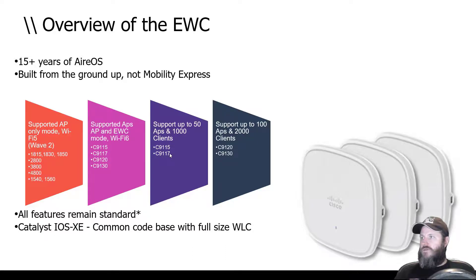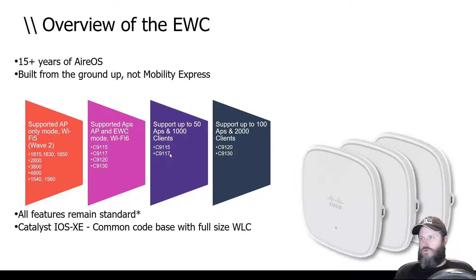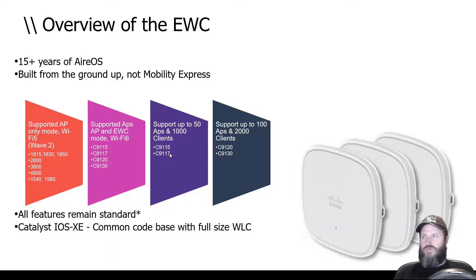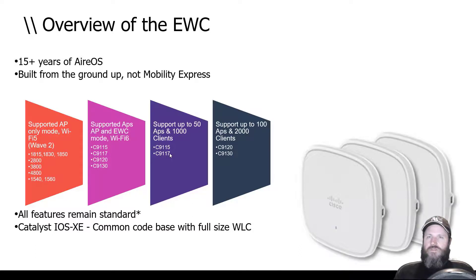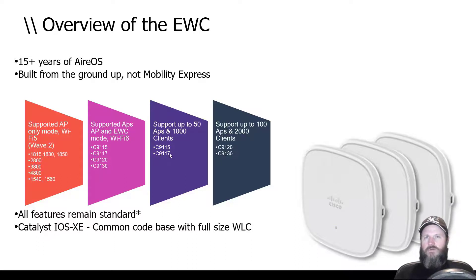The features remain standard — with an asterisk. From the real 9800s to the embedded wireless controller version, it's pretty much the same Catalyst IOS XE common code. However, there are differences: you're missing the Wave 1 APs, the EWC runs in FlexConnect-only mode, and there are some GUI differences. There's an expert mode in the EWC that you don't have in the 9800 — the 9800 is essentially always in expert mode.